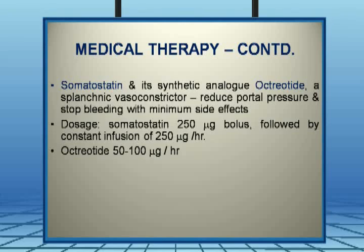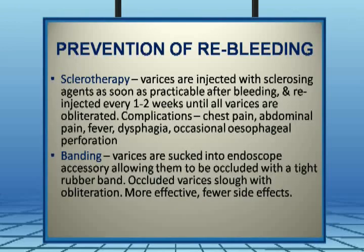Dosage of somatostatin is 250 micrograms bolus followed by constant infusion; octreotide can be given at 50 to 100 micrograms per hour. With sclerotherapy, reinjection of sclerosing agents is done every one to two weeks, and after four to six sessions patients achieve good control over variceal bleeding. Band ligation involves sucking varices into the endoscope and occluding them with a rubber band — more effective with fewer side effects than sclerotherapy.